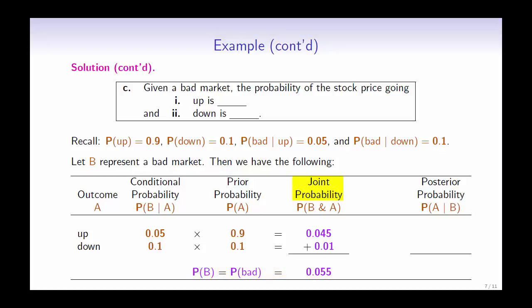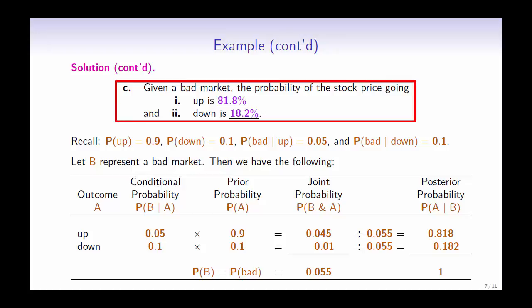Using this, we can divide the joint probability by the probability of a bad market to get the posterior probabilities. So we have 0.045 divided by 0.055, giving us the posterior probability 0.818, and 0.01 divided by 0.055, giving us the posterior probability 0.182. Checking our answer, we can see that they sum up to 1. Therefore, given a bad market, the probability of the stock price going up is 81.8% and down is 18.2%.